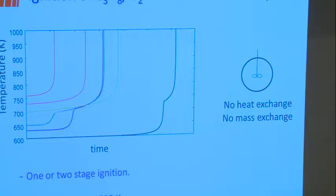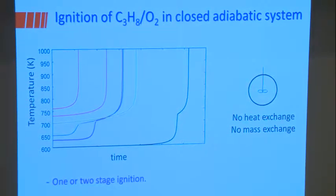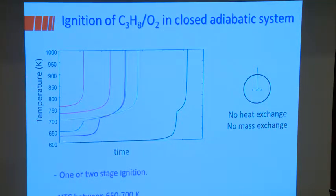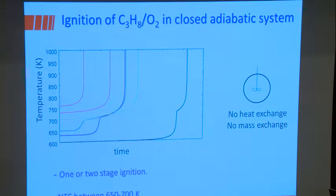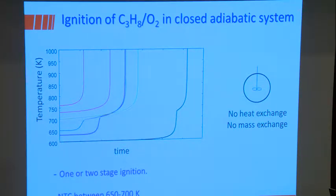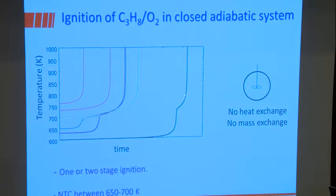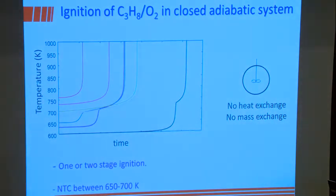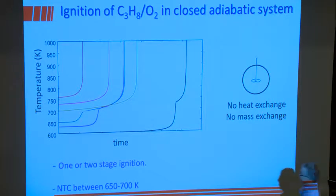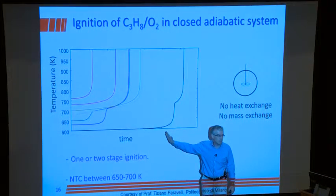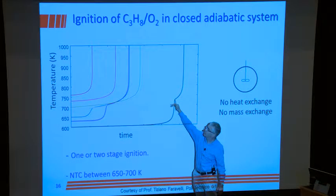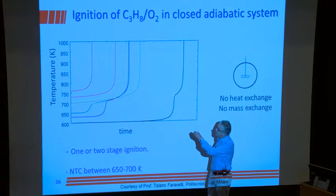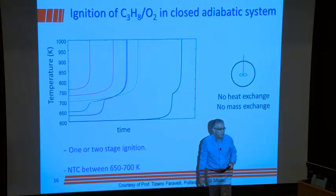That brings us to the next slide, showing the ignition of propane in a closed adiabatic system — the temperature-time history when you simulate alkane oxidation at different temperatures. At an initial temperature of 600 Kelvin — arbitrary time units — you can see we get a first stage ignition followed very closely by a second stage ignition. For a long time we get very little reactivity, then a sharp increase, then it stops, and there is a defined difference between the two stages. So we're getting a two-stage ignition event.